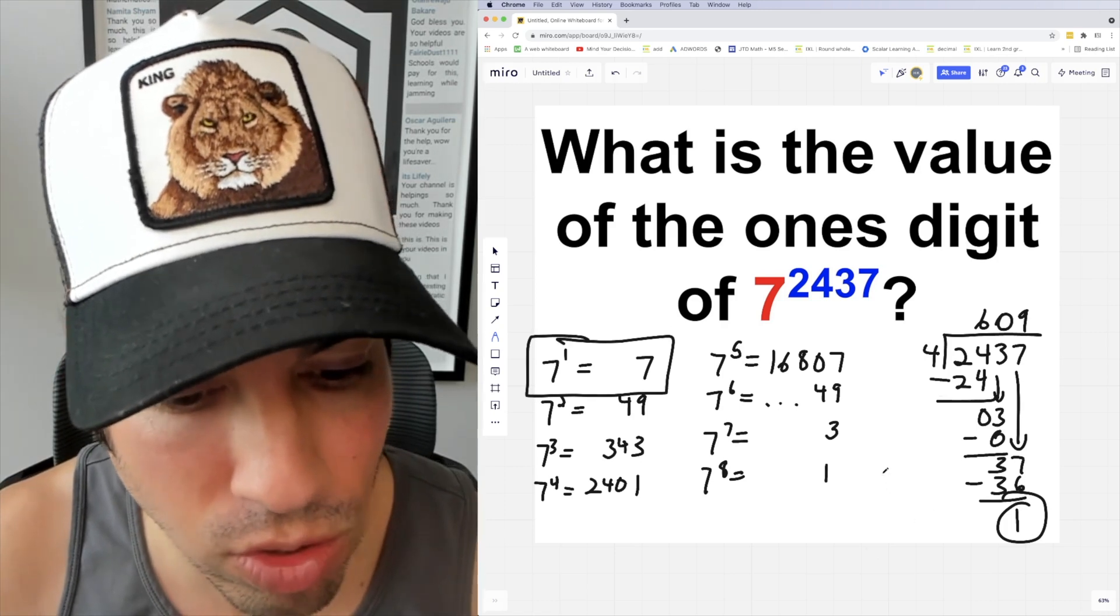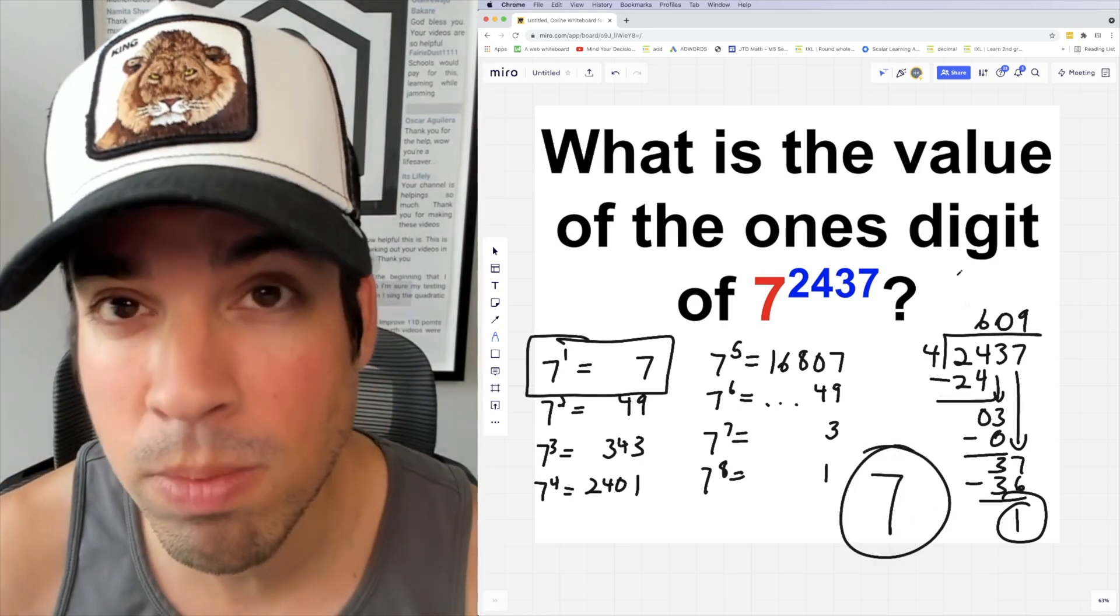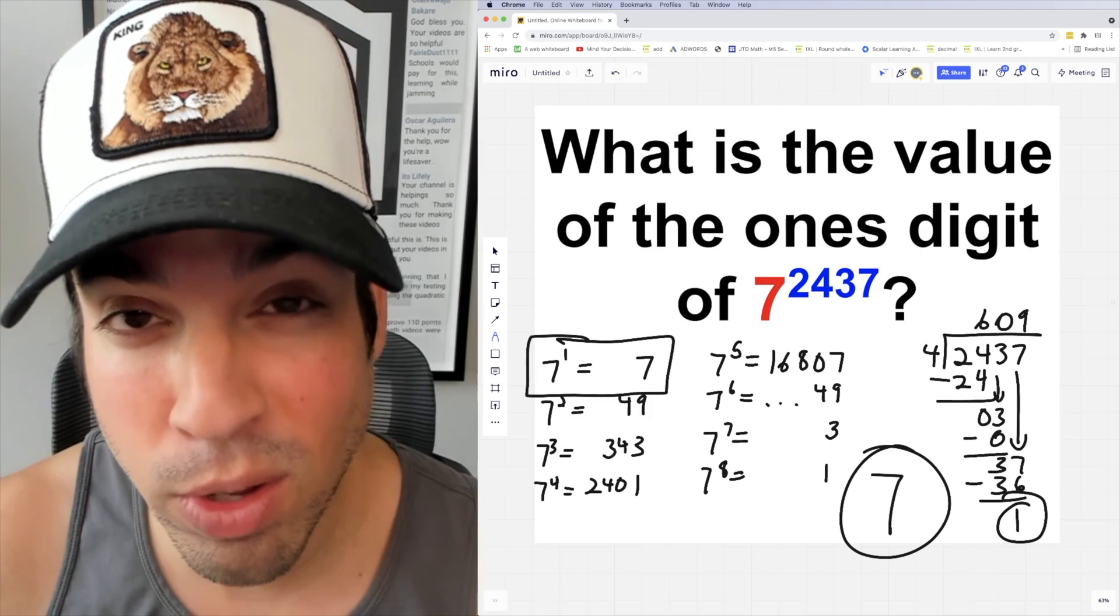That means that it's going to have the same ones digit as 7 to the first, which means the answer is 7. Boom, done!